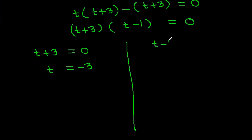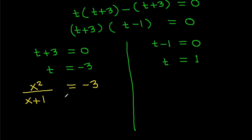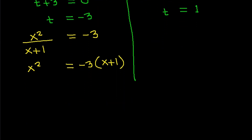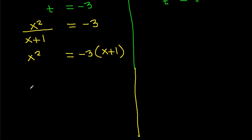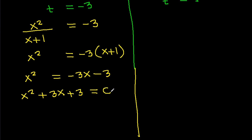Or t − 1 = 0, so t = 1. For the case t = x²/(x+1) = −3, cross-multiplying gives x² = −3(x + 1), so x² = −3x − 3, leading to x² + 3x + 3 = 0.